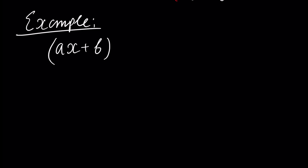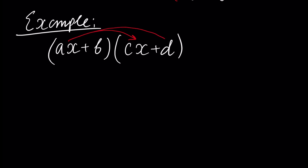Assume this polynomial is multiplied by another polynomial: cx plus d. First, we multiply the first element of the first polynomial by the first element of the second polynomial, and then by the second element. Next, we multiply b, the second element, by the first and second elements of the second polynomial. So we have four multiplications.